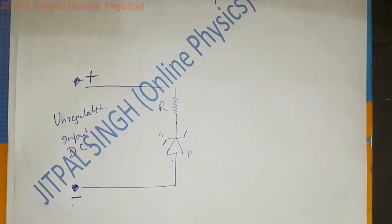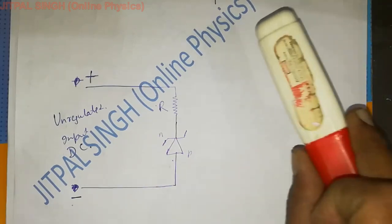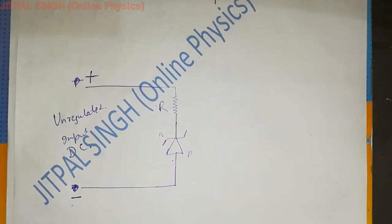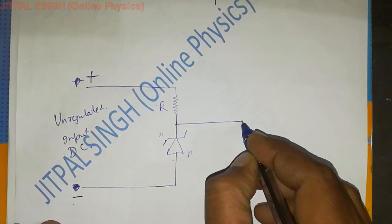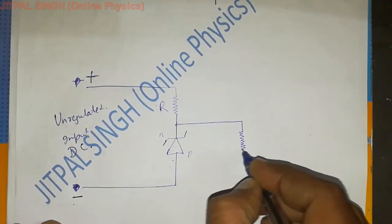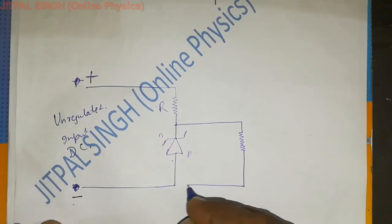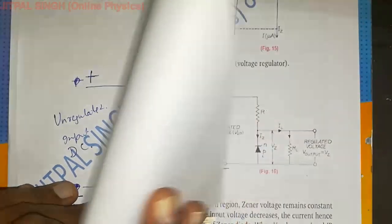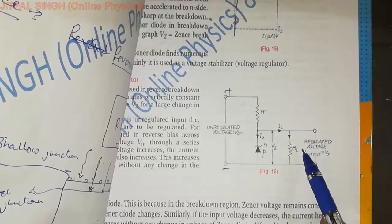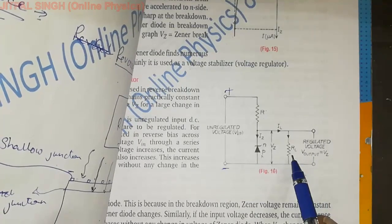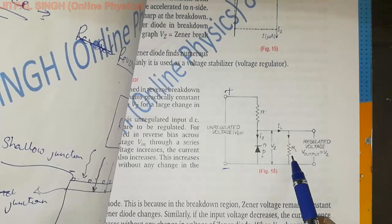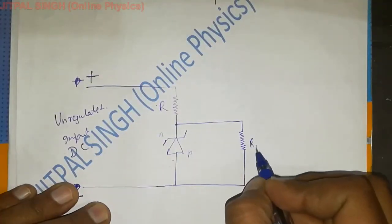For example, this. And this Zener diode will be parallel with this device. Especially parallel. Please, I hope you remember why in parallel. Because the voltage is the same in parallel. So this is the device. And in your book, in this page, it is R suffix L.